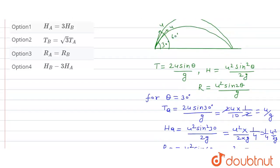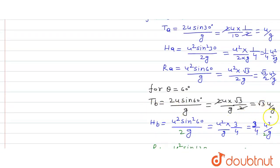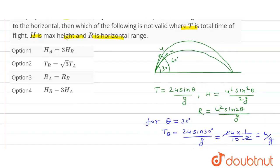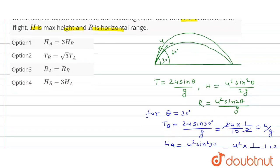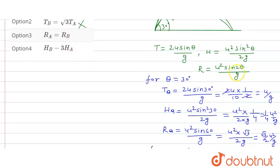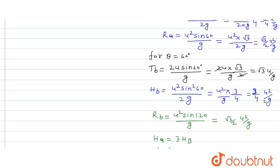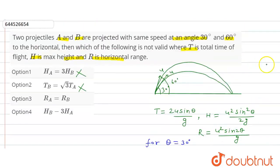Now, tB equals root 3 u over g and tA equals u over g, so tB equals root 3 times tA — this is correct. And rA equals root 3 over 2 u squared over g and rB also equals root 3 over 2 u squared over g, so rA equals rB — this is also satisfied, meaning this option is also correct.